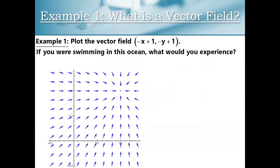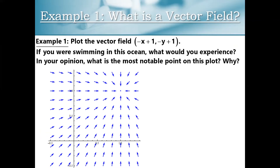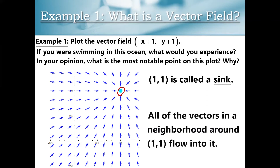A good framework for understanding a vector field is to imagine that you're swimming in the ocean and imagining what you would experience. There's a notable point on this plot — you probably noticed the point 1 comma 1. It seems like all of the vectors are flowing into that point, and it is true that they are all flowing into that point. We have a mathematical name for a point like that: it's called a sink. If all of the vectors in a small neighborhood around our point flow into it, we call this a sink.